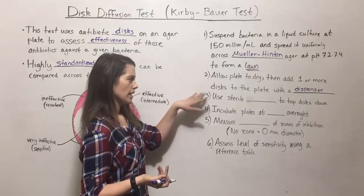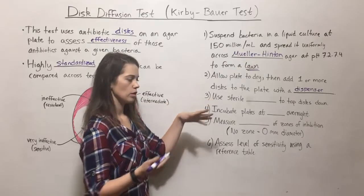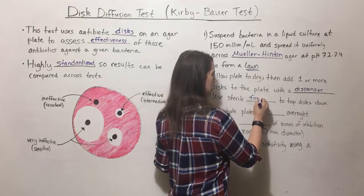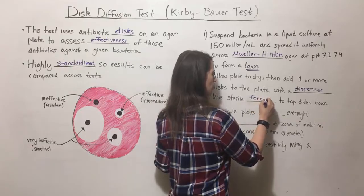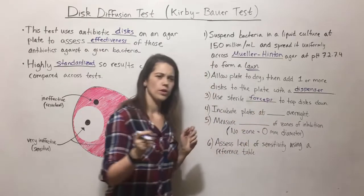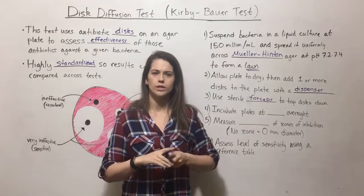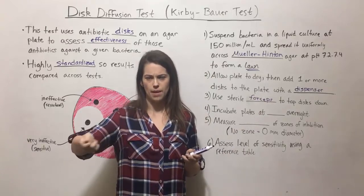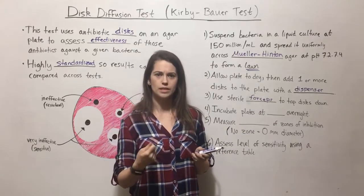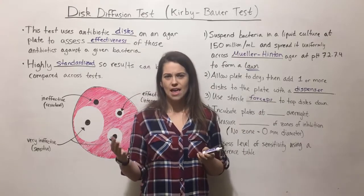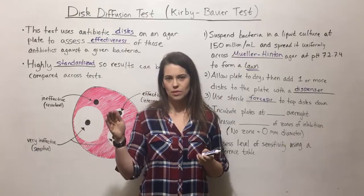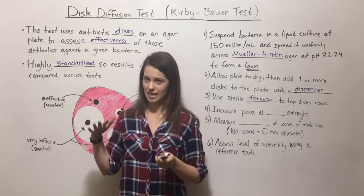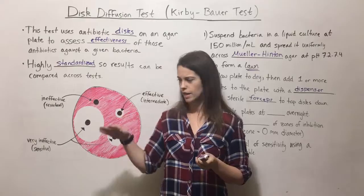Once you've added the discs to the plate, you use sterile forceps to tap each disc down. Typically you place the forceps in a little alcohol and then pass them through a flame to keep them sterile. This helps the discs tightly adhere to the agar surface.